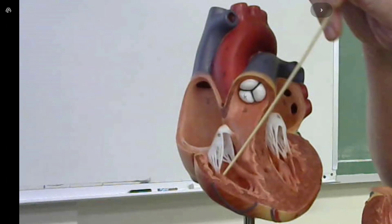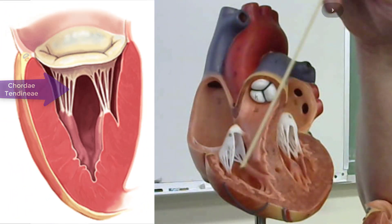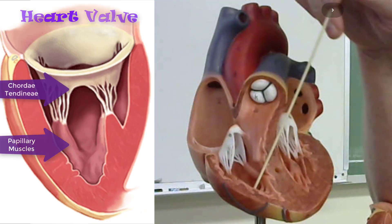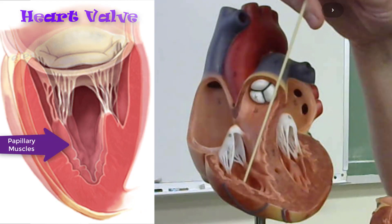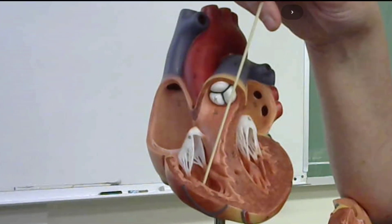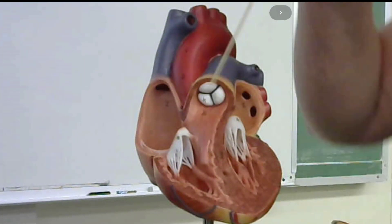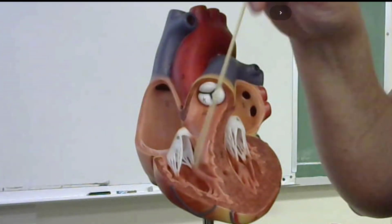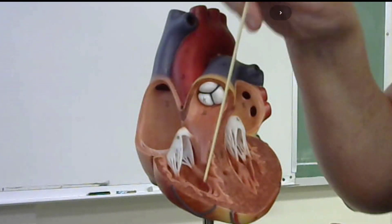The chordae tendineae along with the papillary muscles are going to prevent eversion or prolapse of the valve — in other words, they prevent the valves from opening in the reverse direction. This ensures that the valve stays closed when it's supposed to stay closed.